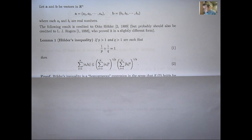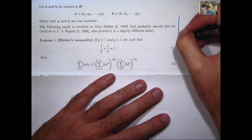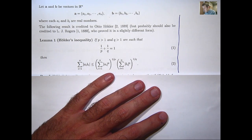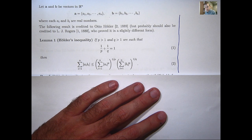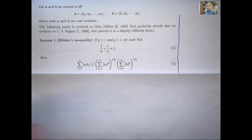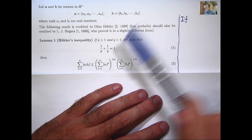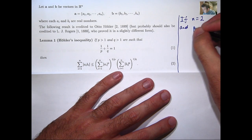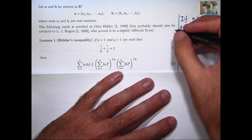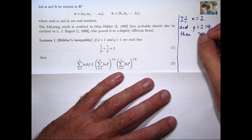Inequality 2 is rather confronting when you first see it — it looks quite abstract. So let's discuss the simple case when N equals 2, so we're working in the plane R squared. Let's let P equal 2, so Q has to equal 2 as well. N, P, and Q don't have to all equal each other; I'm just choosing a simple case. So what does this look like?